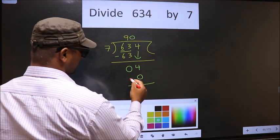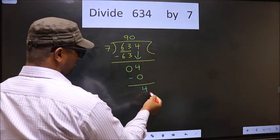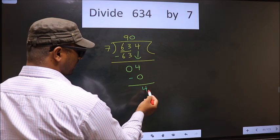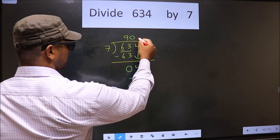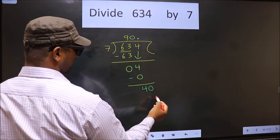Now you subtract. 4 minus 0, 4. We did not bring any number down here. And 4 is smaller than 7. So now you put a dot and take 0 here.